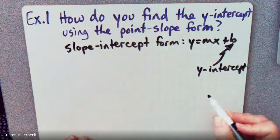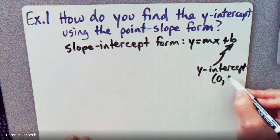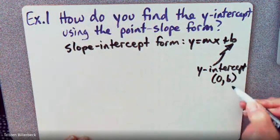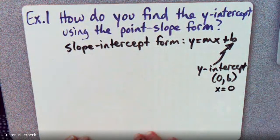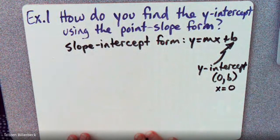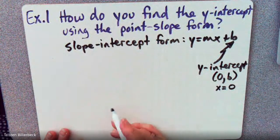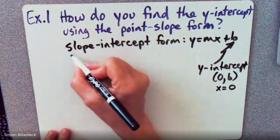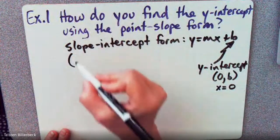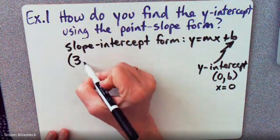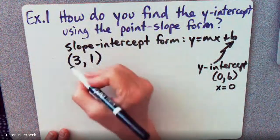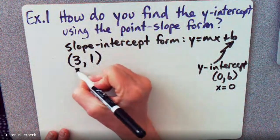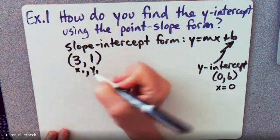The Y-intercept coordinate is (0, B). So X equals 0 at the Y-intercept. So if we chose just a random point, let's choose (3, 1) as X1, Y1.